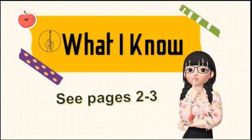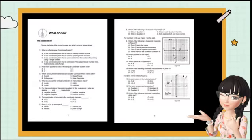To start with, let's check your prior knowledge by answering questions 1 to 15 in What I Know on pages 2 to 3. Please read and understand the questions and, as much as possible, refrain from guessing. Choose the letter of the correct answer and write it on your answer sheet. Good luck!